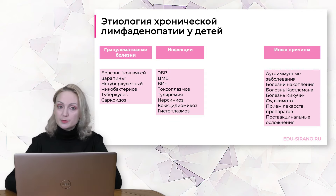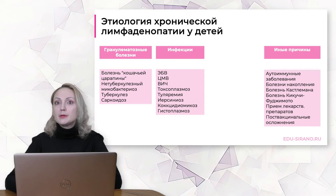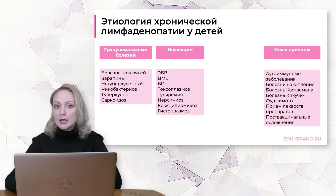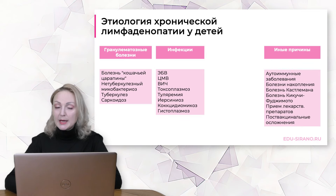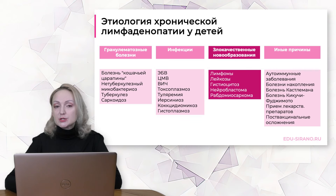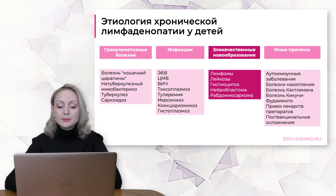Среди редких болезней, дающих хроническую лимфаденопатию, следует упомянуть болезнь Кастлемана, болезнь Кикучи–Фудзимото, ряд аутоиммунных заболеваний. Болезни накопления, такие как болезнь Гоше и болезнь Ниманна–Пика, также могут давать увеличение лимфатических узлов. Большой группой, вызывающей хроническую лимфаденопатию у детей, являются злокачественные новообразования: в первую очередь острые лейкозы, лимфомы, гистиоцитоз, нейробластомы и рабдомиосаркомы.